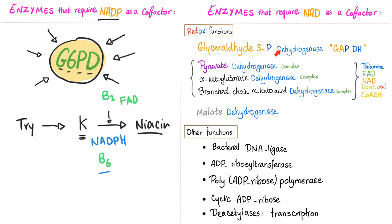What are the enzymes that require NAD as a cofactor? A lot. Glyceraldehyde-3-phosphate dehydrogenase, a famous enzyme in glycolysis. Pyruvate dehydrogenase, another enzyme in glycolysis. Alpha-ketoglutarate dehydrogenase complex, a famous enzyme in Krebs cycle. Branched-chain alpha-ketoacid dehydrogenase, this is amino acid metabolism. These three enzymes require not just NAD, but five cofactors. Remember Teflon company: Thiamine, FAD, NAD, lipoic acid, and CoA. Malate dehydrogenase also requires NAD.